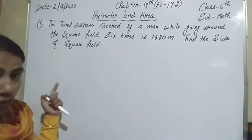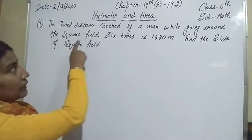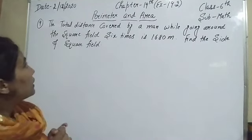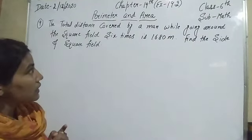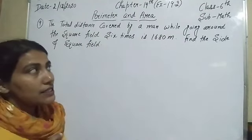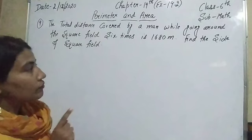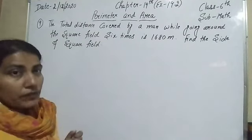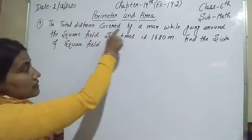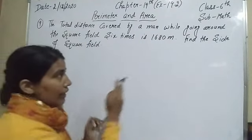Today I'm going to start from the ninth question. The statement of the ninth question is: the total distance covered by a man while going around the square field six times is 1680 meters. Find the side of the square field. Here the total distance covered by a man relates to the square field.